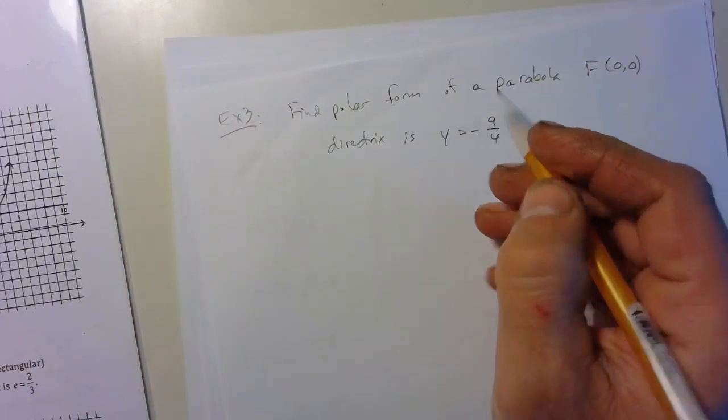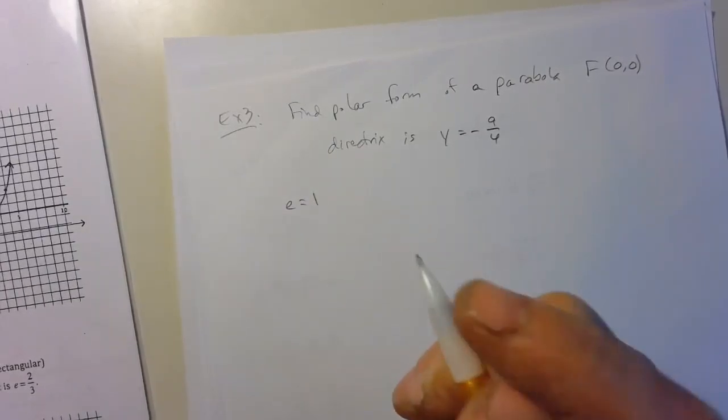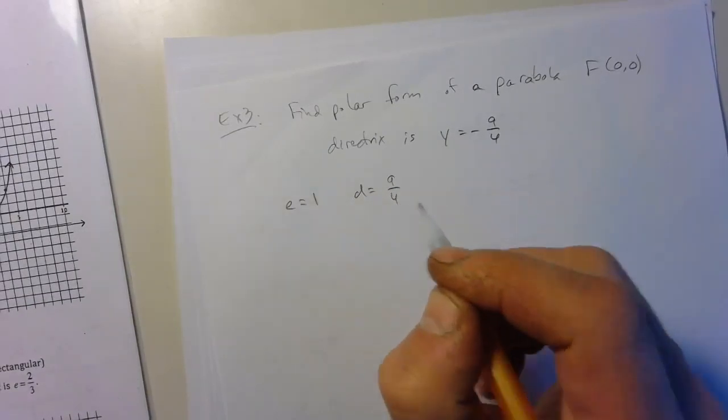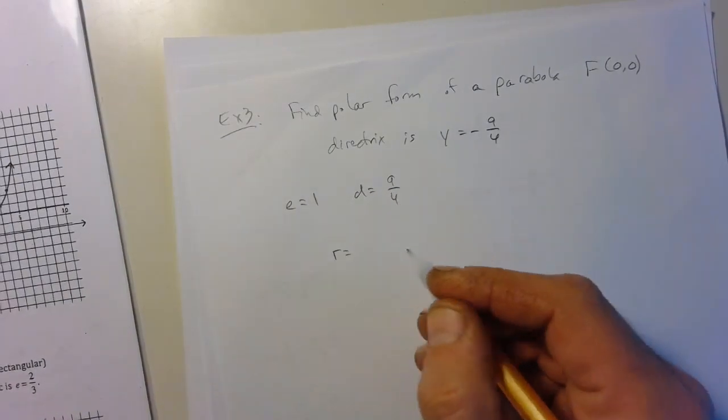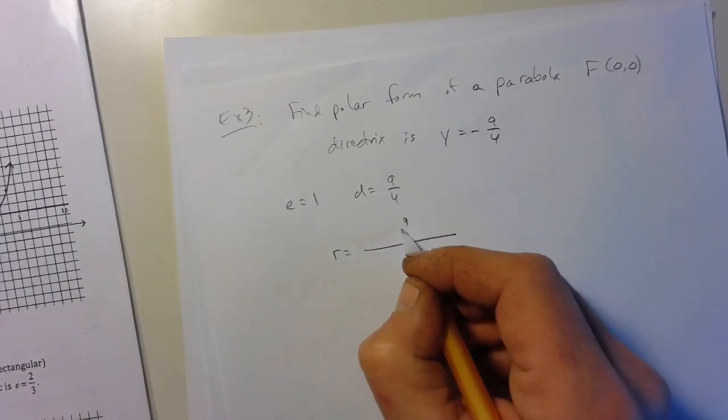So it says parabola, so the eccentricity is one. So we know that. We also know the distance from the focus to the directrix is nine-quarters. So if we go to look at our equation here, we know the top, e times d, is going to be nine-fourths.